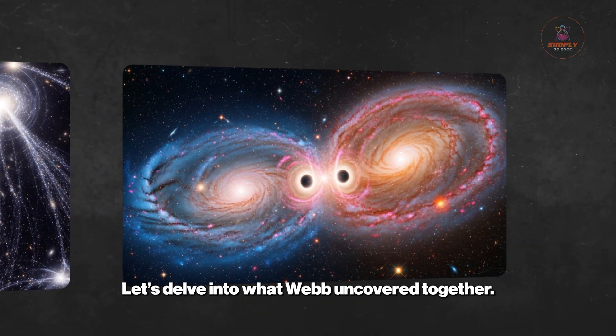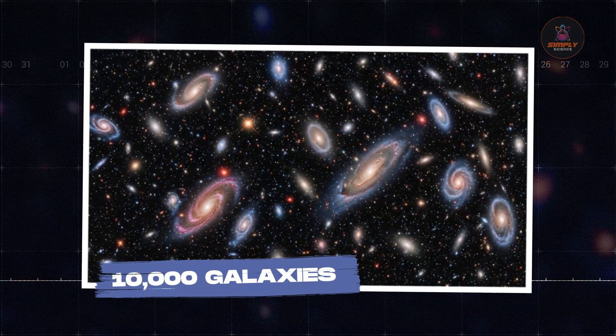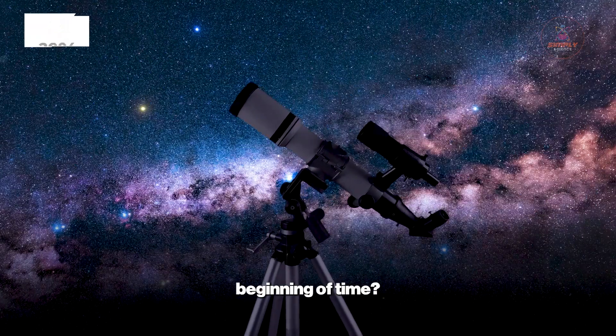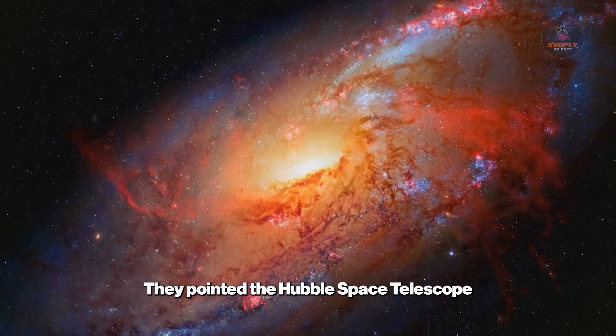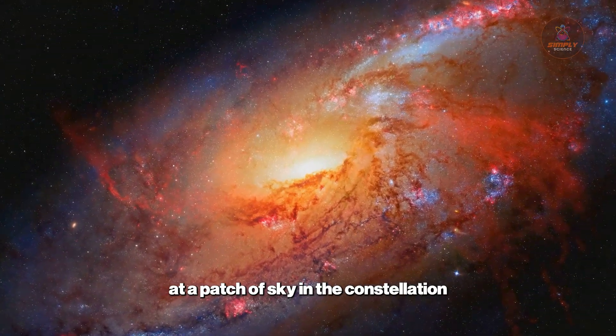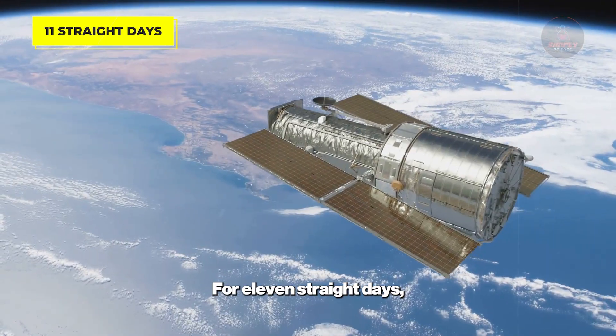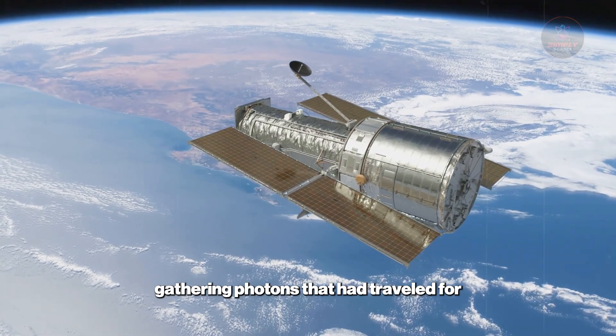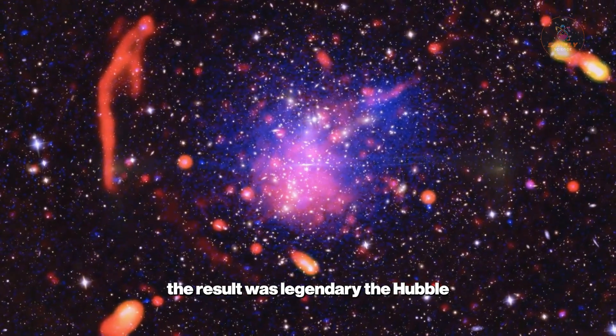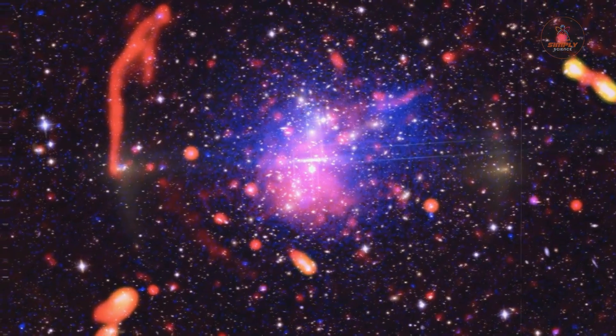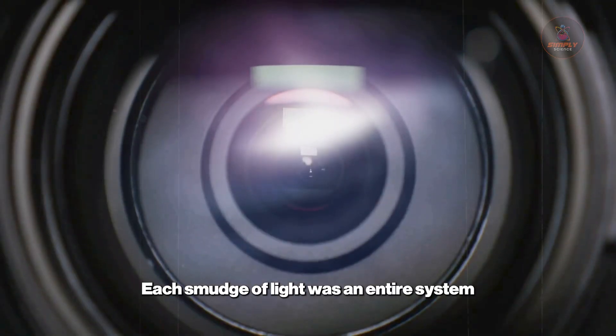Ten thousand galaxies. How do you take a picture of the beginning of time? In 2004, astronomers led by Stephen Beckwith gambled on a wild idea. They pointed the Hubble Space Telescope at a patch of sky in the constellation Fornax so dark and empty it seemed pointless. For 11 straight days, Hubble stared into that void, gathering photons that had traveled for over 13 billion years. When the images were stitched together, the result was legendary: the Hubble Ultra Deep Field. In an area less than one-tenth the size of the full moon, nearly 10,000 galaxies appeared.